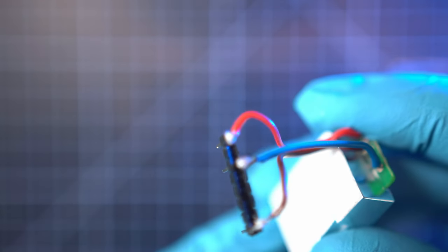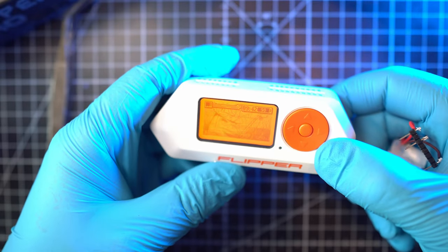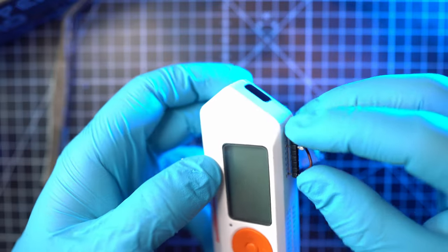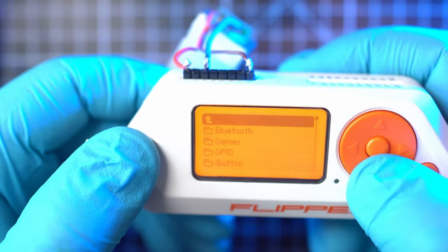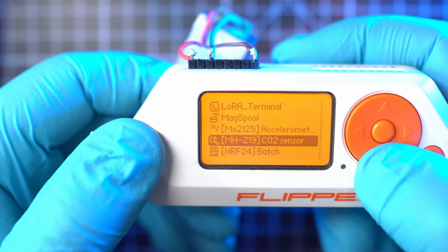Alright, once all finished up, we can test run it. First thing first, turn off Flipper and connect MHZ19 module. Let's turn it back on and go apps. Then, GPIO and look for MHZ19 CO2 sensor.